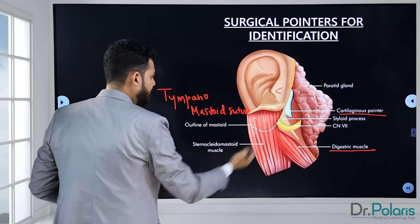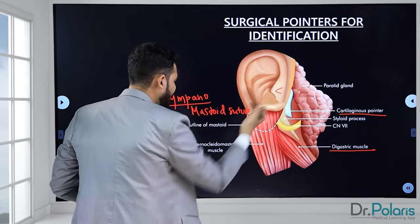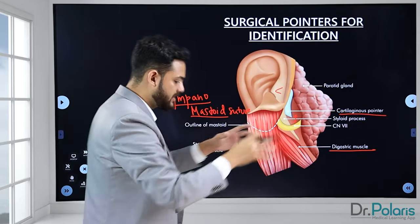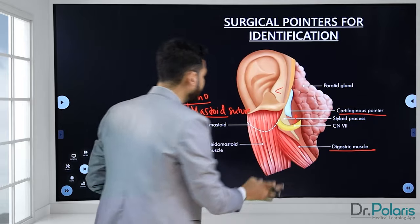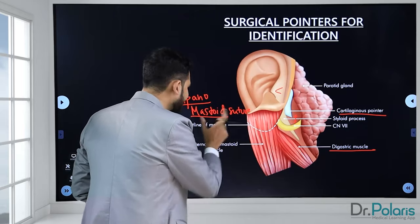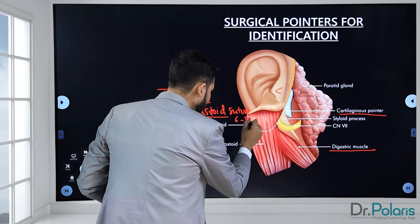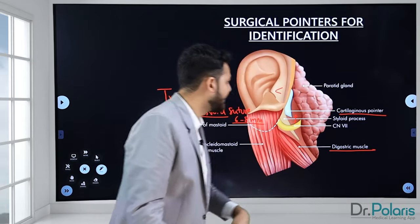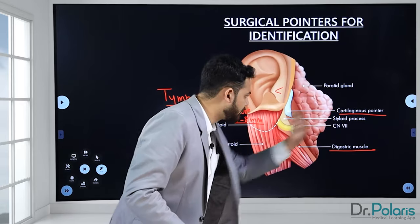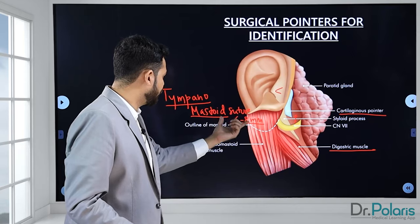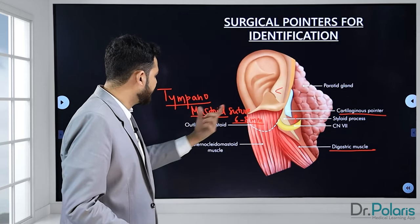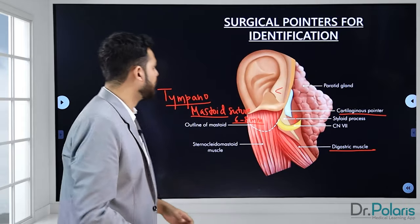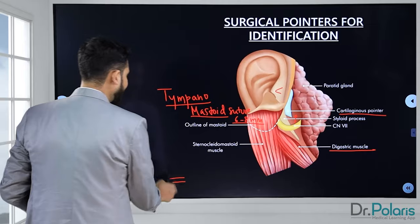The tympanomastoid suture is at the junction between the tympanic part of the temporal bone and the mastoid segment. Six to eight millimeters inferior and medial to this suture is the facial nerve trunk. Remember these four surgical pointers: posterior belly of digastric, tragal cartilage pointer, styloid process, and tympanomastoid suture line. These can be asked as exam questions on facial nerve identification landmarks.